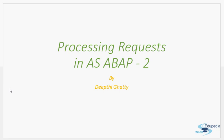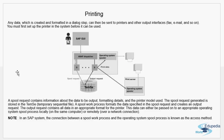The first topic is printing, handled by the spool work process. Any data which is created and formatted in a dialogue step can then be sent to printers and other output interfaces like fax, email, etc. You must first set up the printer in the system before it can be used. So whenever particular data has to be formatted and sent to some printer or other output device like mail or fax, this is taken care of by the spool work process.